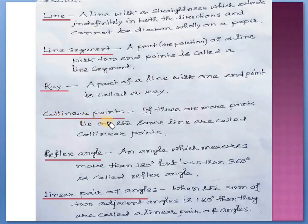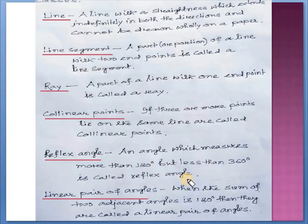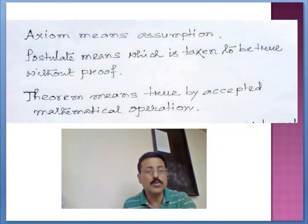Now, collinear points: if three or more points lie on the same line, they are called collinear points; otherwise they are called non-collinear points. Now reflex angle: an angle which measures more than 180 degrees but less than 360 degrees is called a reflex angle. Linear pair of angles: when the sum of two adjacent angles is 180 degrees, they are called a linear pair of angles. Now students, you also have to know axiom, postulate, and theorem.